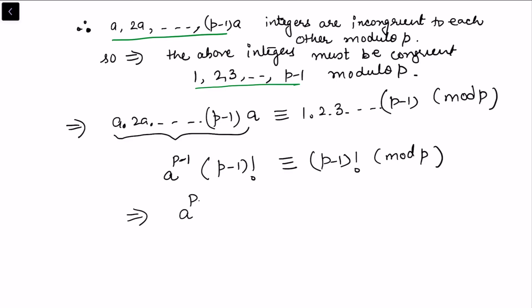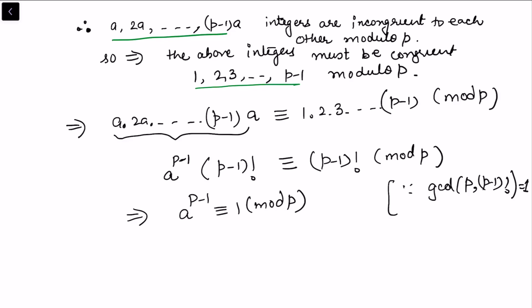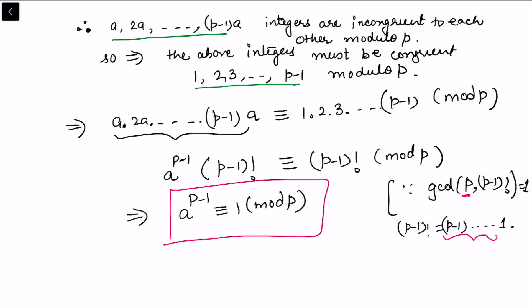We can cancel (p-1)! from both sides. This is valid because gcd(p, (p-1)!) = 1, since p is prime and none of the integers 1 through p-1 share a common factor with p. Hence we conclude that a^(p-1) ≡ 1 (mod p), which completes the proof of Fermat's Little Theorem.